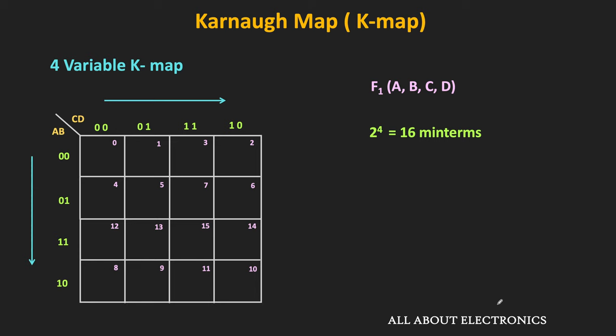For 4 variables, there are total 16 possibilities — or in other words, 16 minterms. Each cell of the kmap represents a specific combination of variables a, b, c, and d. Each combination represents a specific minterm, so each cell of this kmap represents a specific minterm. The number at the top right corner of each cell represents the specific minterm which is represented by that cell.